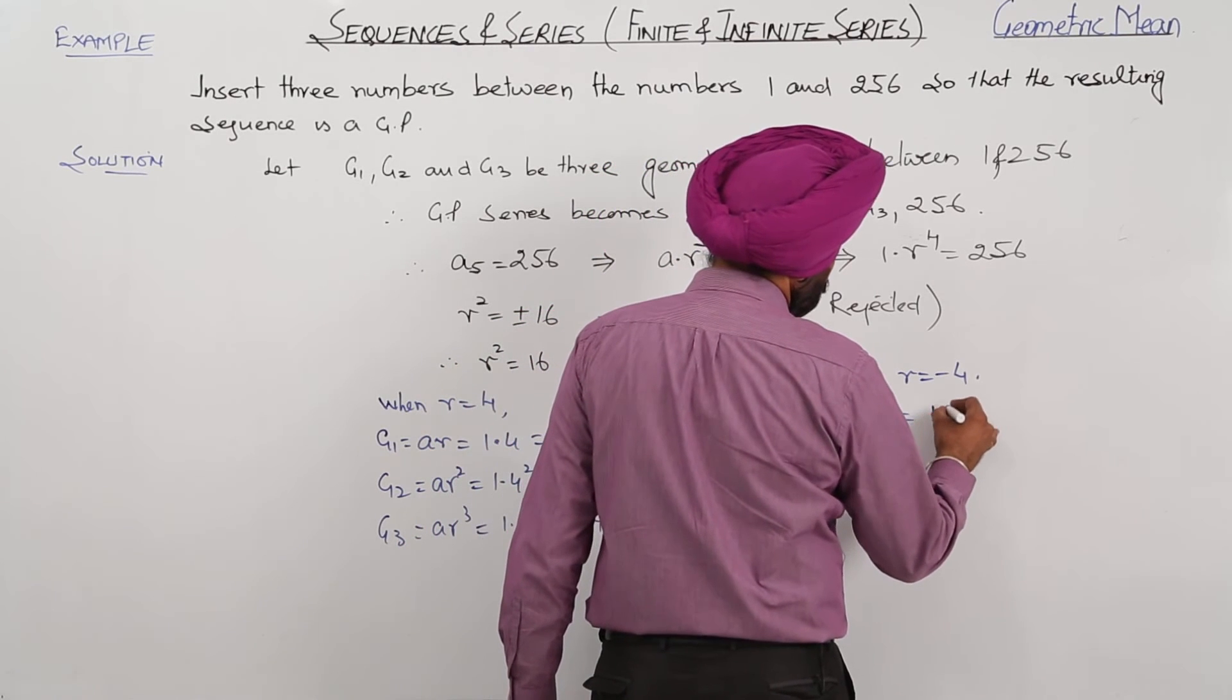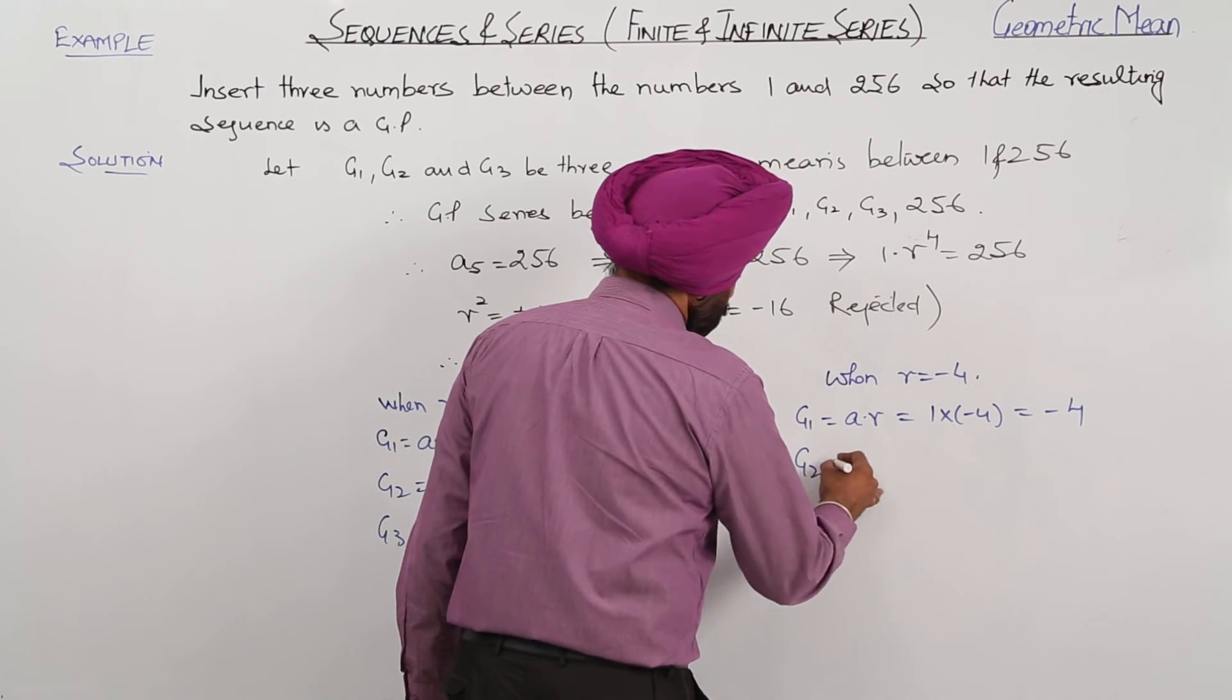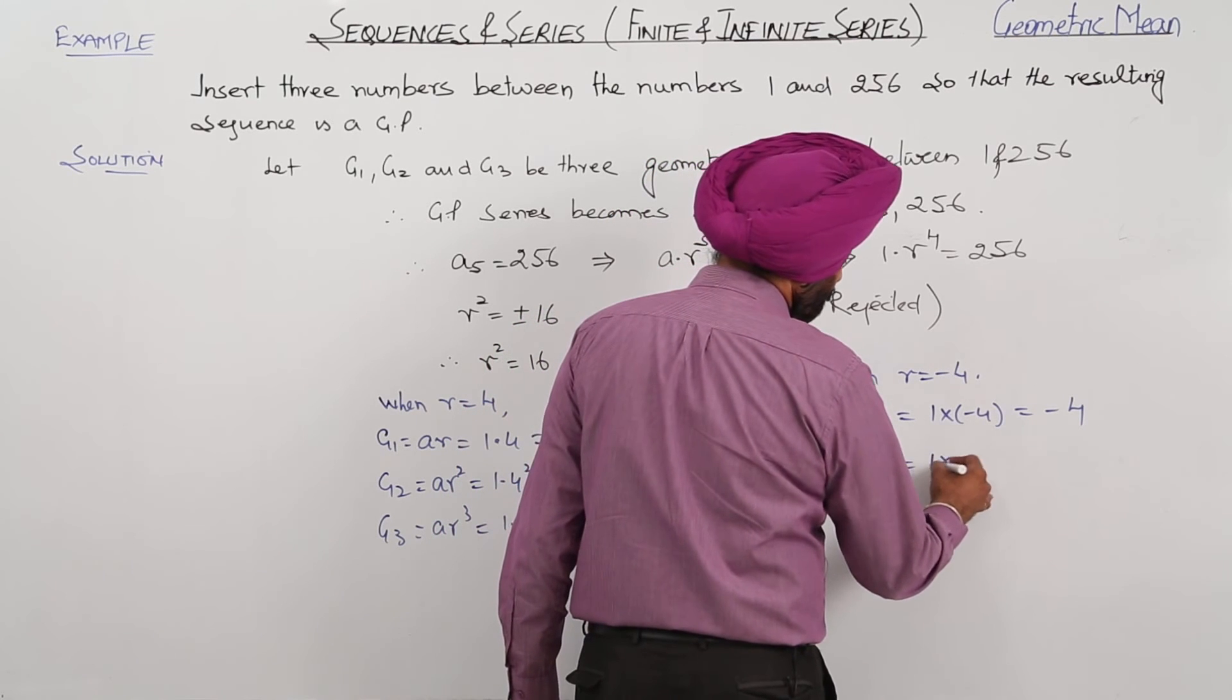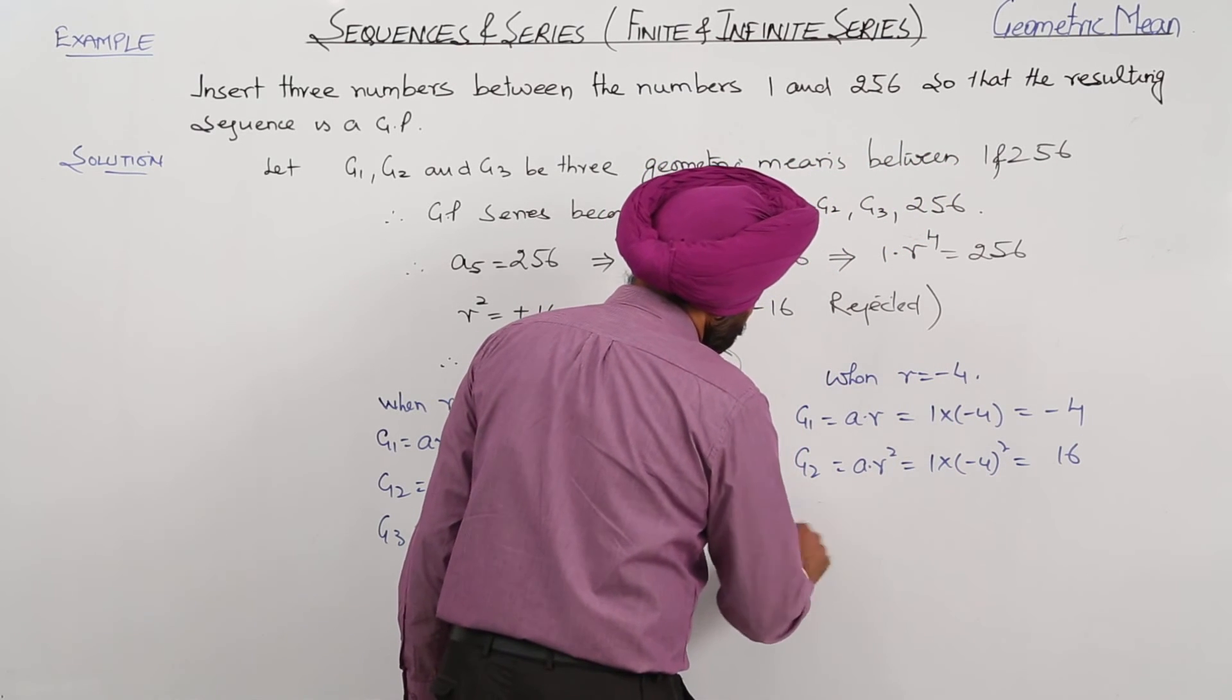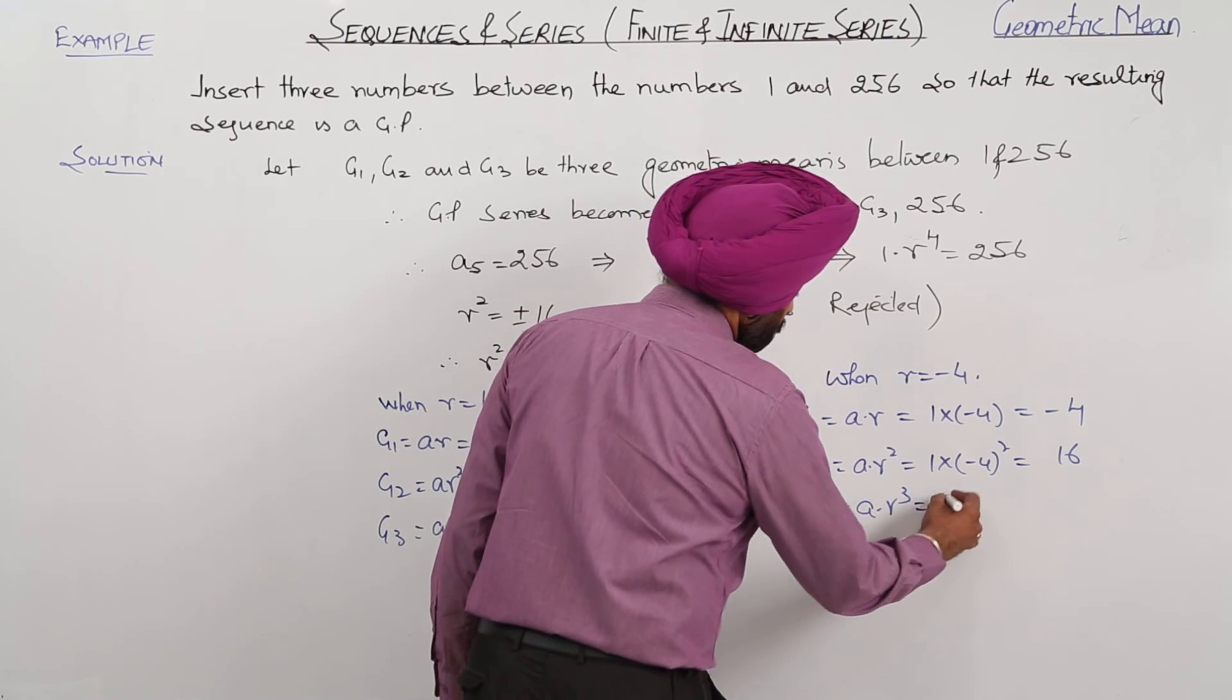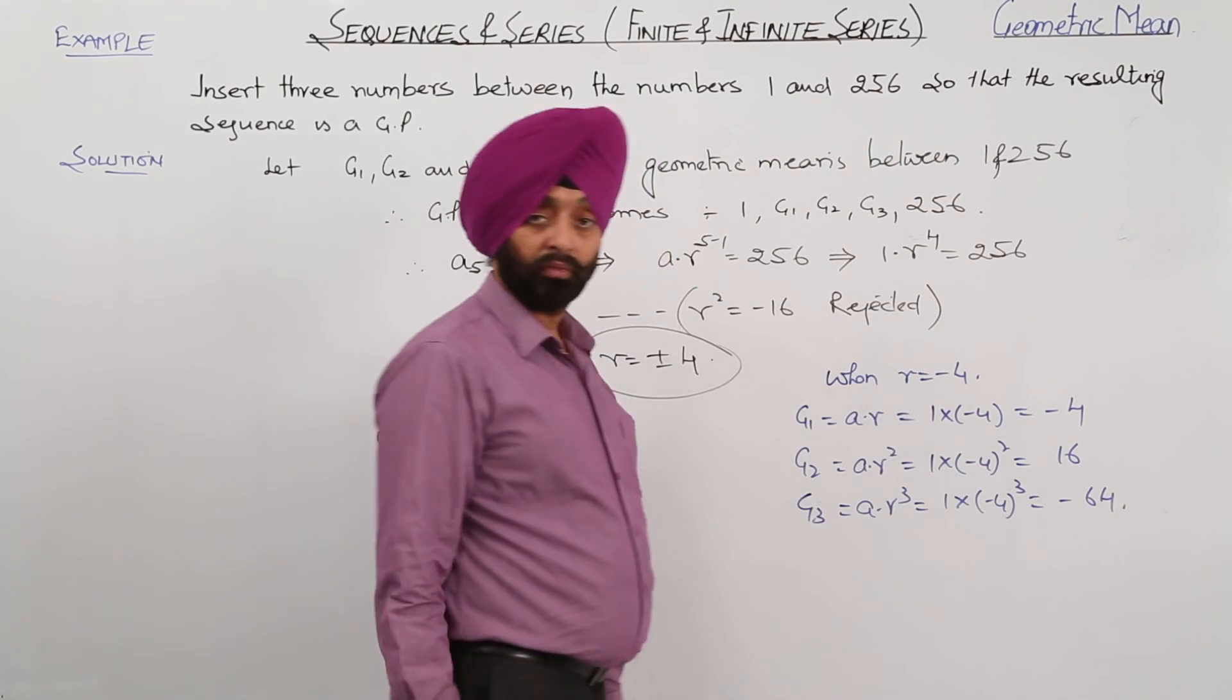So G2 is equal to AR squared, this is equal to 16, and G3 is equal to AR cubed, this is equal to 1 times negative 4 cubed, which is negative 64.